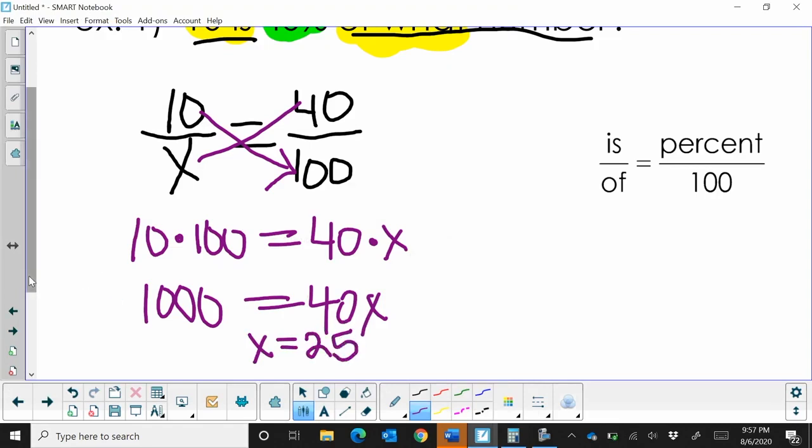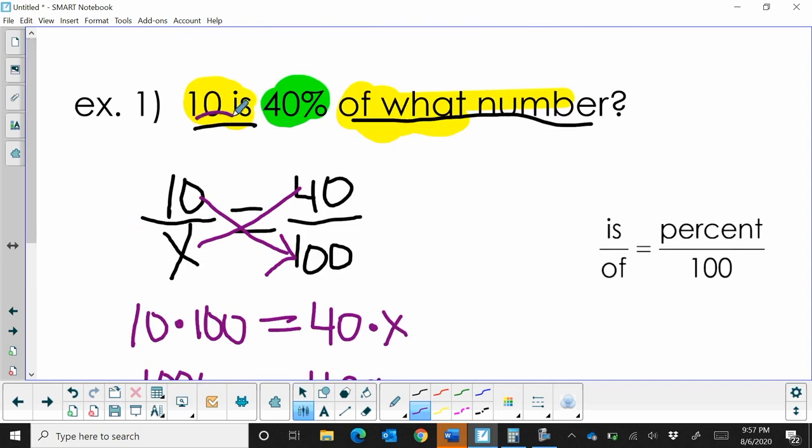So how are we going to read this? What does this mean? 10 is 40% of the value 25.